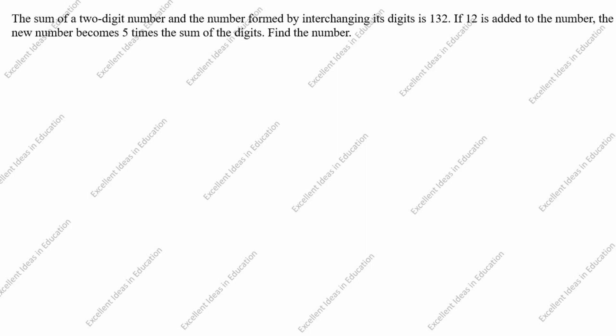Hi students, welcome to my channel Excellent Ideas in Education. Today we are going to solve this problem: the sum of a two-digit number and the number formed by interchanging its digits is 132. If 12 is added to the number, the new number becomes five times the sum of the digits. Find the number.